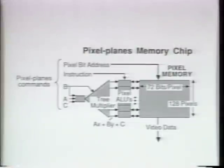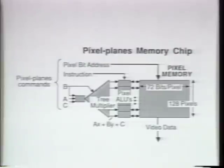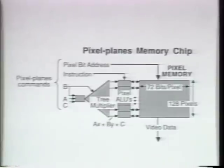The heart of the system is this cluster of custom frame buffer memory chips, which perform calculations in parallel at every pixel with very little dedicated circuitry. Each chip contains, in addition to the usual pixel memories, a one-bit arithmetic logic unit for each pixel and a binary tree of one-bit adders that can rapidly evaluate linear expressions in the screen's x and y coordinates for every pixel in the chip simultaneously.